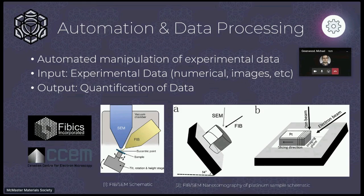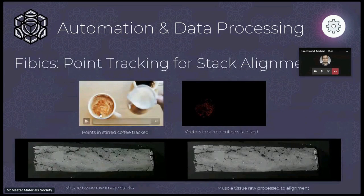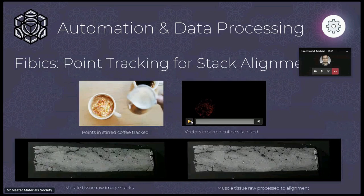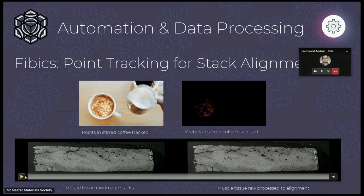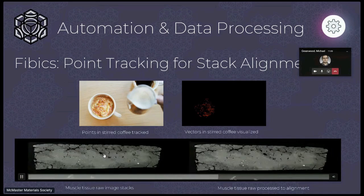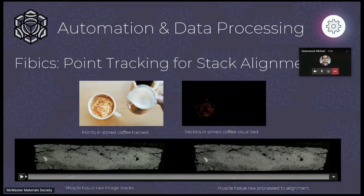Using these two beams together is really cool because you can do subsequent imaging and milling of a surface, so theoretically you can get a 3D representation through this iterative process. One of the coolest things I worked on was a stack alignment application using point tracking — you can see a coffee cup swirling around — where I programmed it to go frame by frame, look for where points were in the previous frame, and create a vector field describing how the coffee droplets evolve throughout the dataset.